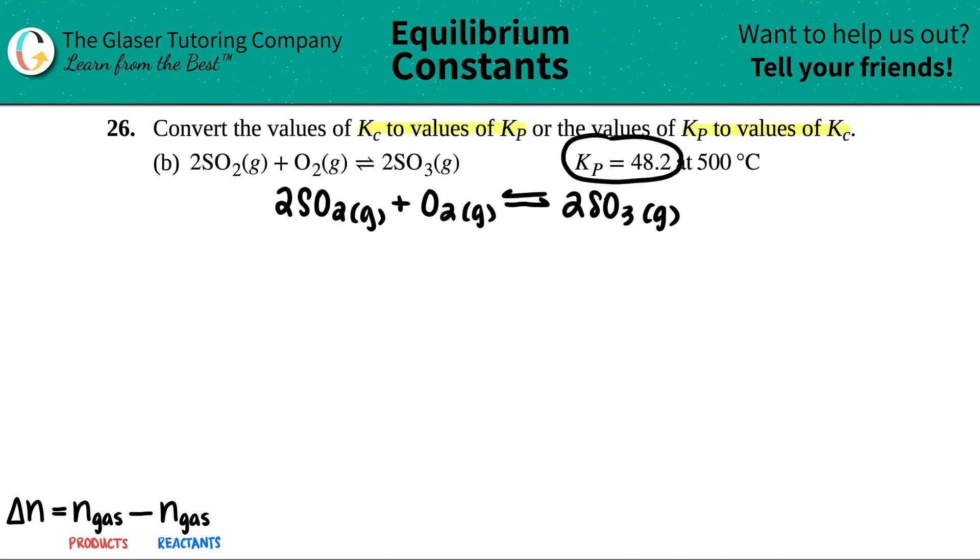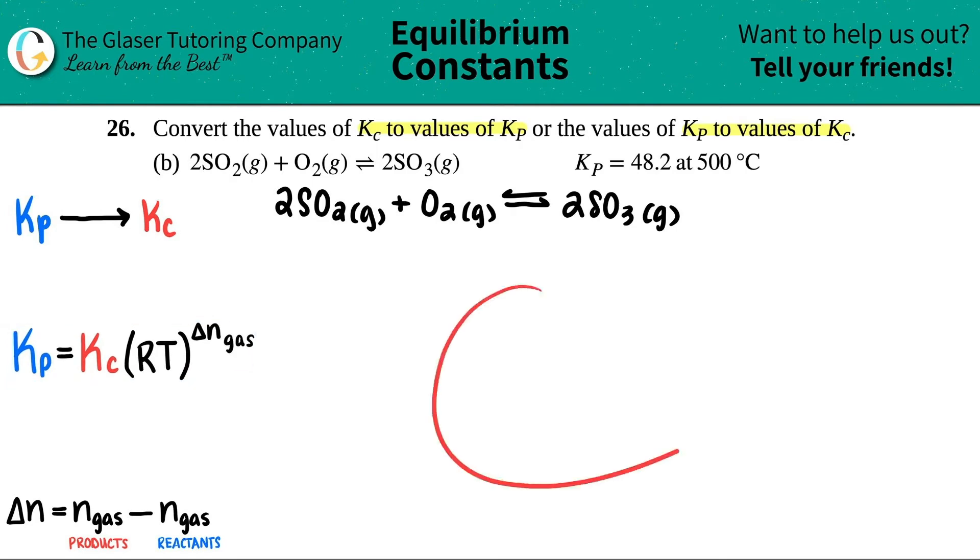Okay. Now in this case, they gave me the Kp value. So it seems like we're converting a Kp to a Kc. So I have a Kp value. All I have to do is just convert that into a Kc value. Well, how do I do that? There's only one formula that you got to memorize which has both Kp and Kc in the same formula. It's this one. So I'm going to put it over here. We're going to mark it up and then we're going to actually do the math over here.